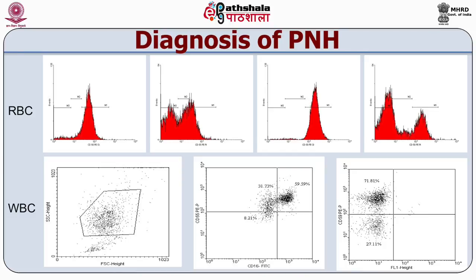These dot plots show how a diagnosis of paroxysmal nocturnal hemoglobinuria (PNH) is made using flow cytometry. PNH is a condition where red blood cells are susceptible to hemolysis due to deficiency of GPI-anchored proteins, specifically CD55 and CD59. After gating red blood cells, expression of CD55 and CD59 is found to be reduced on a small subset. Quantifying the number of red blood cells lacking these antigens helps clinicians assess the patient's susceptibility to the next round of hemolysis.